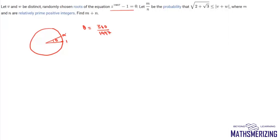Suppose we have two roots v and w, and the angle between them is alpha. Then we can write mod of v plus w is greater than or equal to root 2 plus root 3. Now we know that modulus of each root of unity is 1, so this is 1 plus 1 plus 2 cos alpha, which will be greater than or equal to 2 plus root 3.